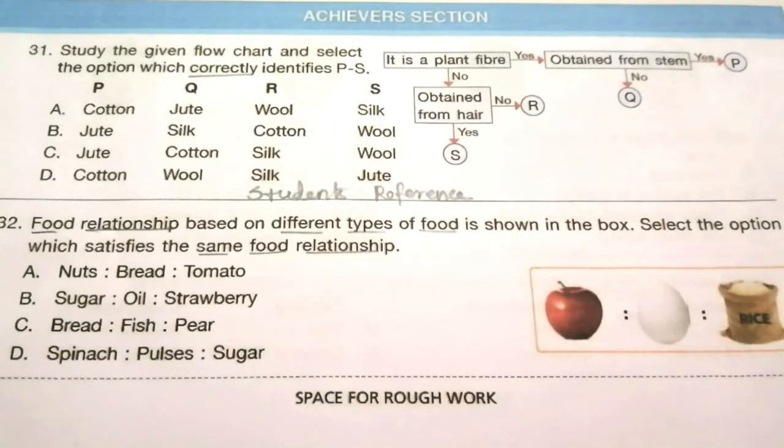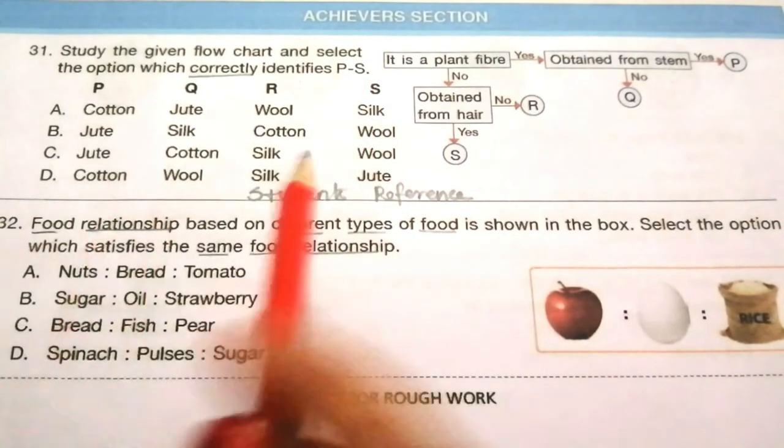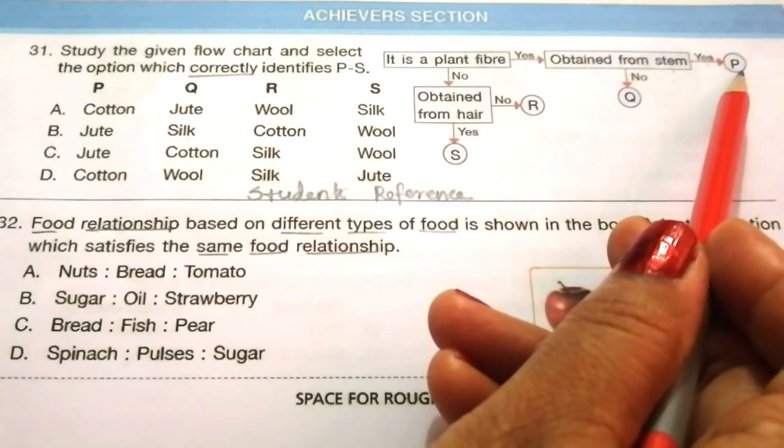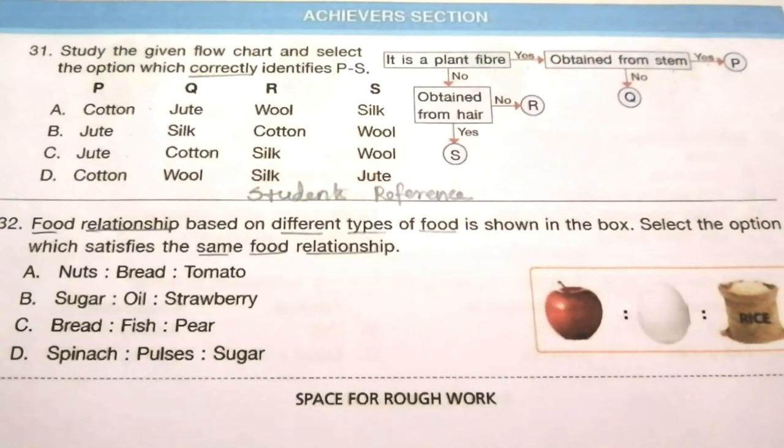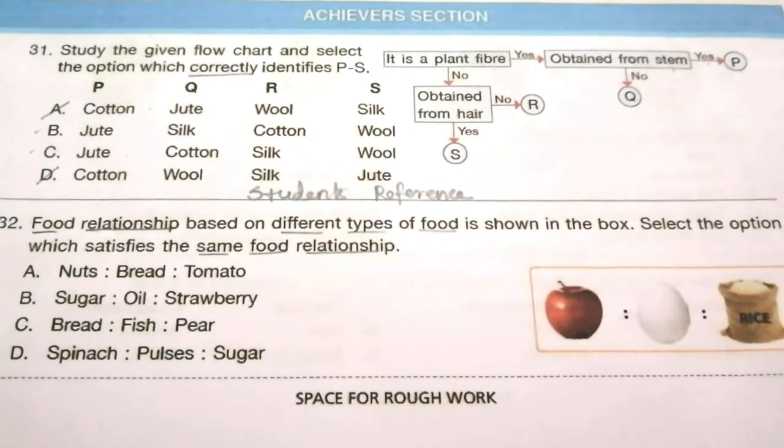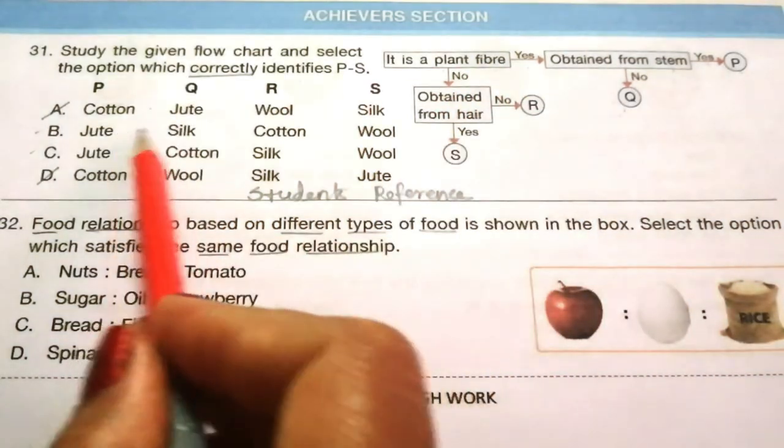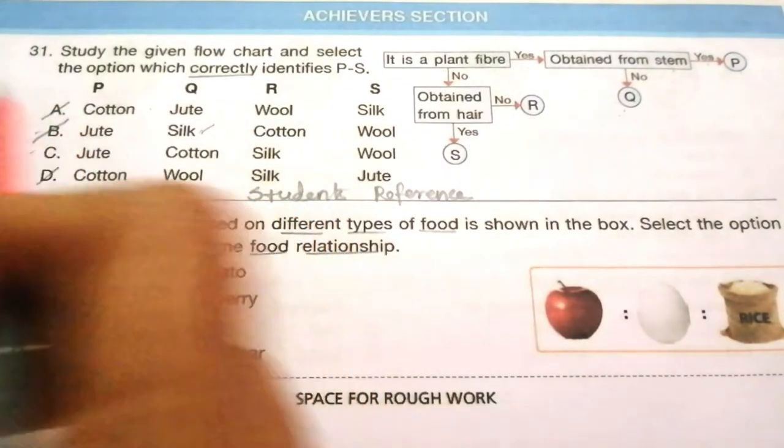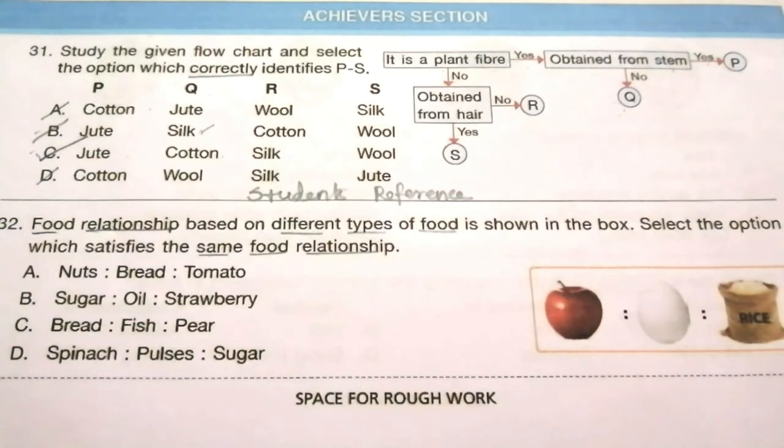Next topic is achievers section. Question 31: Study the given flowchart and select the option which correctly identifies P and Q. Is it a plant fiber? Yes. Obtained from stem? Yes. So P is stem plant fiber - jute. Cotton is also a plant fiber. The correct answer is jute, so the answer may be B or C. If no, then Q is a plant fiber. In B, Q is silk - silk is not a plant fiber, it's an animal fiber, so B is not the answer. In C, cotton is given in Q - cotton is a plant fiber. So the correct answer is C.